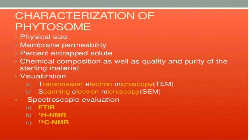Characterization means evaluation or standardization of phytosomes by particle size determination, membrane permeability determination, and chemical composition analysis. Visualization checks the diameter of particles — phytosomes are generally in the micron range, like 0.10 micron to 0.1 micron diameter. These nanoparticle formations can be checked by TEM (transmission electron microscopy) and SEM (scanning electron microscopy). Spectroscopic evaluations using FTIR, proton NMR, and C13 NMR check the spectra of phosphatidylcholine, which is not observed after phytosome formation. These are all the standardization or evaluation parameters for phytosomes.